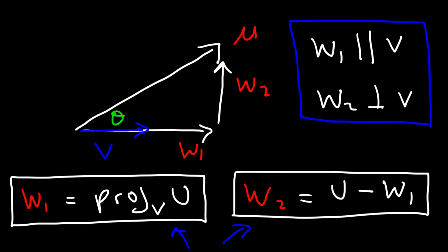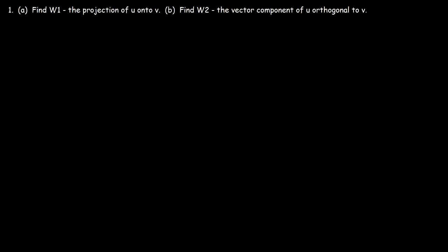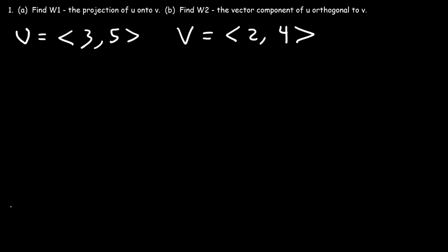So now let's work on some practice problems. Let's start with part a: find w1, the projection of u onto v. Let's say that vector u is (3, 5) and vector v is (2, 4). So with this information, how can we find the projection of u onto v?